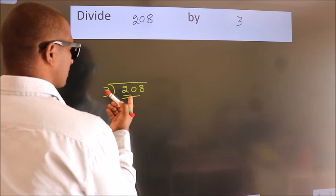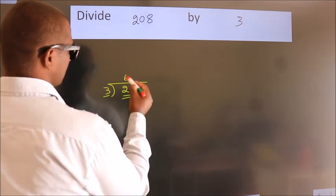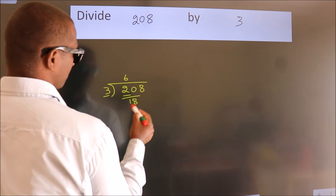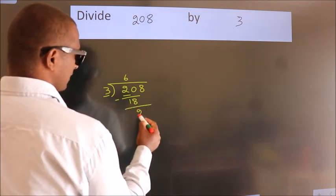20. A number close to 20 in the 3 table is 3×6=18. Now we should subtract. We get 2.